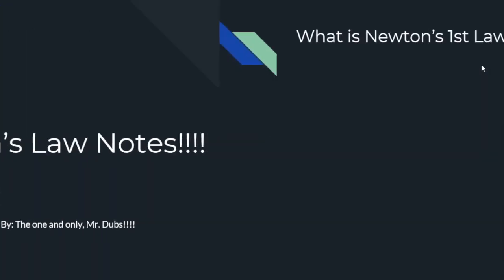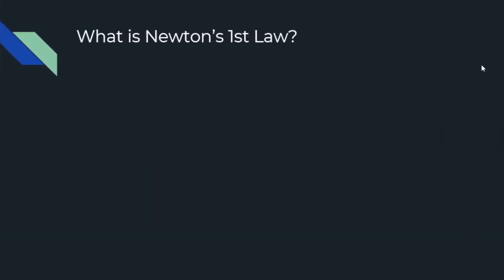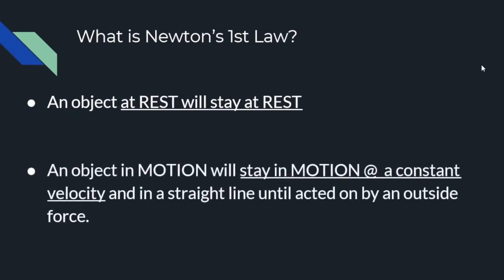All right guys, let's take a look at our Newton's law notes. So the first thing we want to do is figure out what is Newton's first law. Well, Newton's first law tells us that an object at rest will stay at rest. It also tells us that when an object is in motion at a constant velocity and it's moving in a straight line, it will continue to move in a straight line until it is acted on by an outside force.